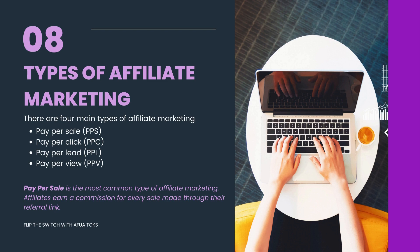There are four main types of affiliate marketing: Pay Per Sale (PPS), Pay Per Click (PPC), Pay Per Lead (PPL), and Pay Per View (PPV). Pay Per Sale is the most common type — the affiliate earns a commission for every sale made through their referral link. All four types will be covered in more depth in my upcoming affiliate marketing series.